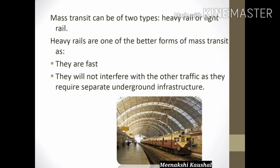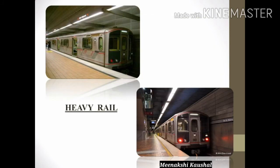Mass transit can be of two types: heavy rail and light rail. Heavy rail is one of the better forms of mass transit. Its advantages are that it is fast and does not interfere with other traffic, as it requires separate underground infrastructure.